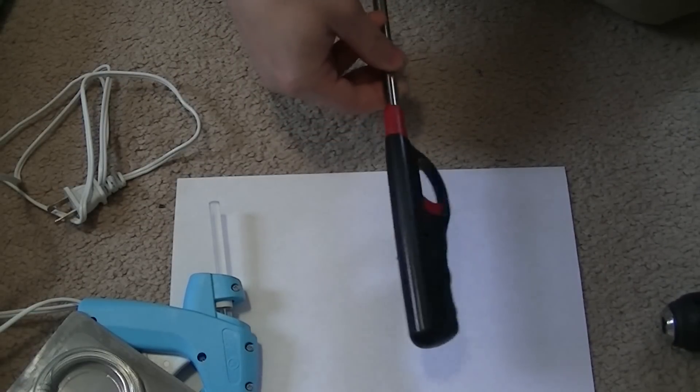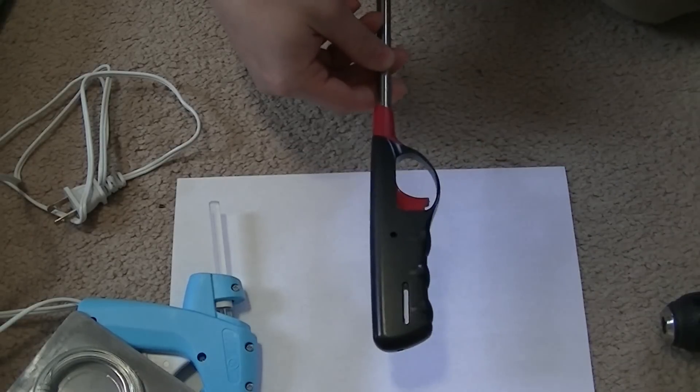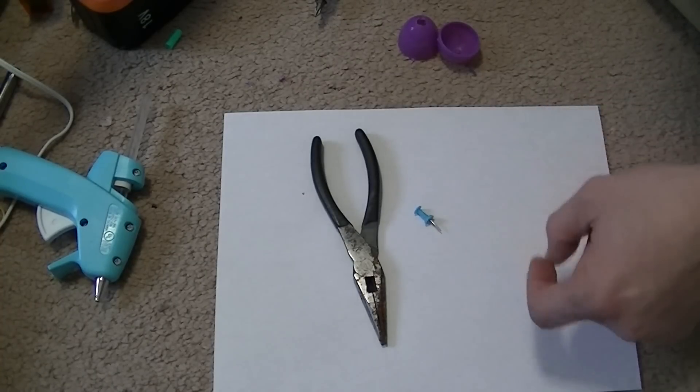Let's not forget we need a lighter, preferably an old lighter we can take apart because we're going to need the striker out of it. We'll also need a thumbtack and some wire cutters.